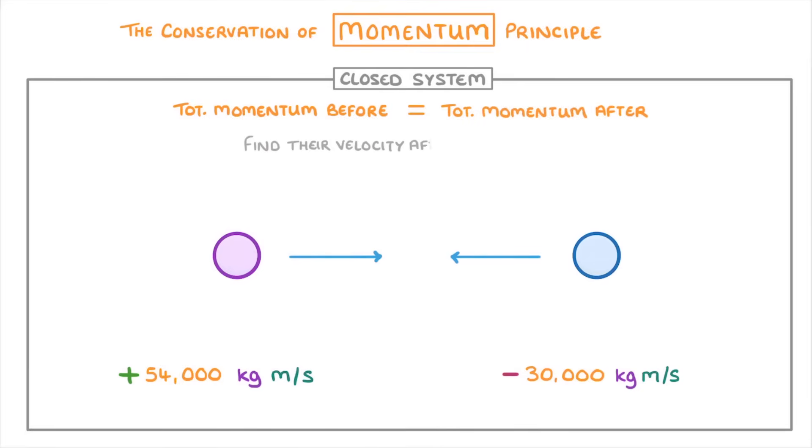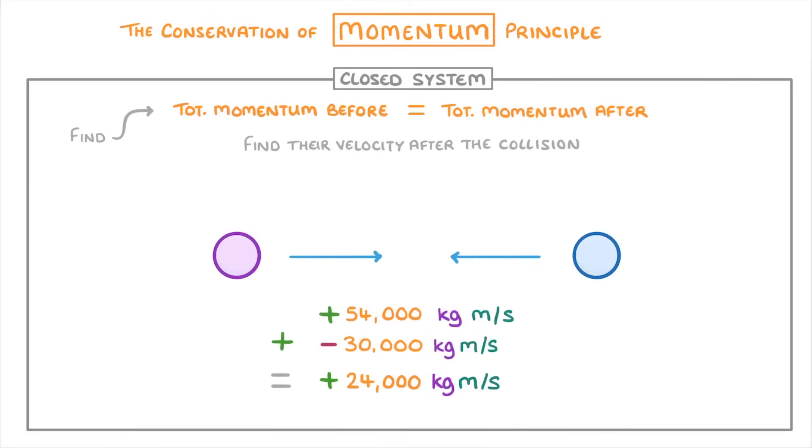How would we find their velocity after the collision? Well, the first thing we need to do is find their total momentum before the collision, which we can do by adding together the dinosaur's and the car's momentums. So 54,000 plus negative 30,000, which gives us positive 24,000 kg m per second.